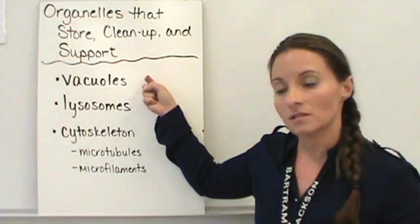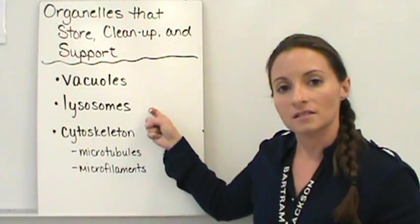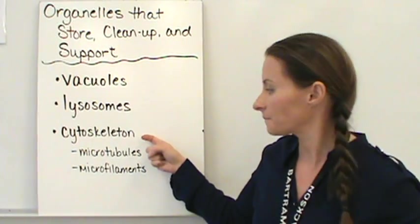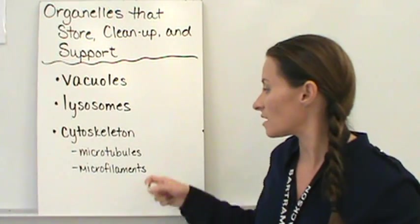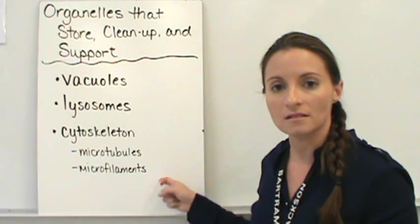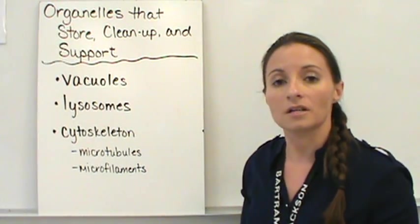We're going to discuss vacuoles, lysosomes, and the cytoskeleton. The cytoskeleton has two major parts that make it up: microtubules and microfilaments. So these are all the organelles that we're going to talk about today.